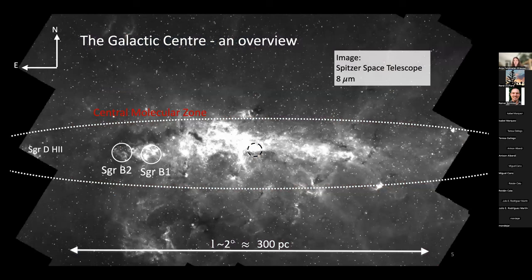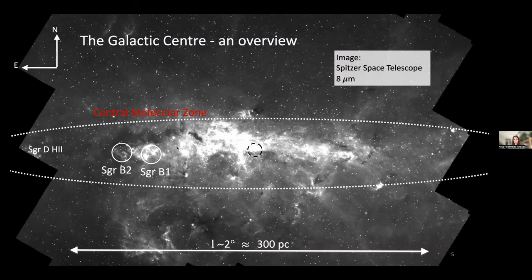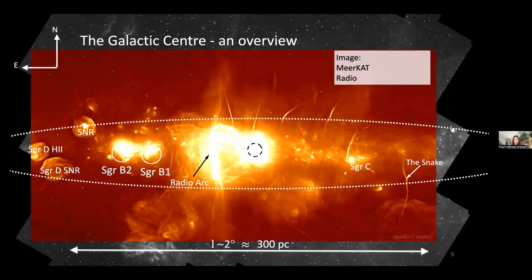There is also a lot of gas and dust in this region, visible in the 8-micron Spitzer image. There are HII regions such as Sagittarius B1, giant molecular clouds, and the famous Brick. Star formation is ongoing. The molecular gas is not distributed symmetrically — there is more gas and dust emission in the galactic east than the west. In a radio image observed with MeerKAT, we also see various supernova remnants and long filaments — up to 100 parsecs long — which are probably magnetized and may be connected with past activity of the supermassive black hole.